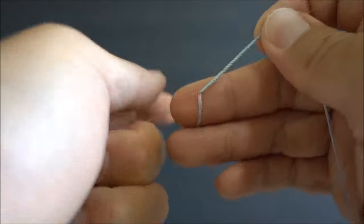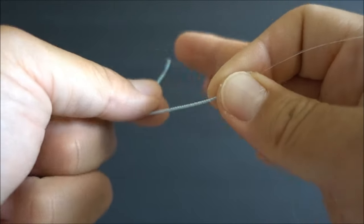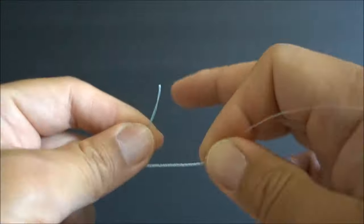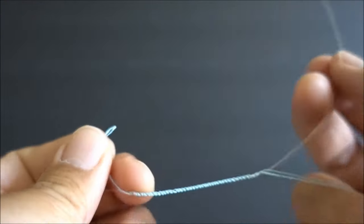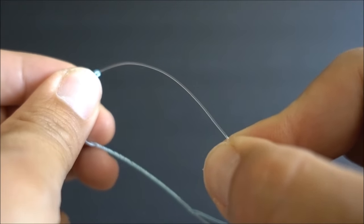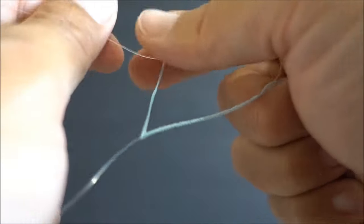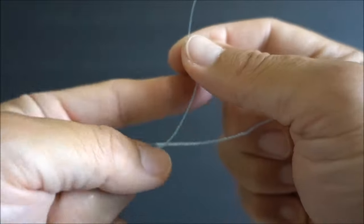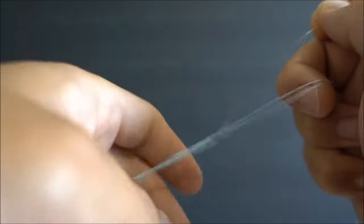Just going to keep wrapping it until the length of the wrap is longer than the loop end of the braid. So once that's done, I'm going to feed the tag end of the mono into a braided loop. Like so. And then bring the end of the loop to the point where you start wrapping it.